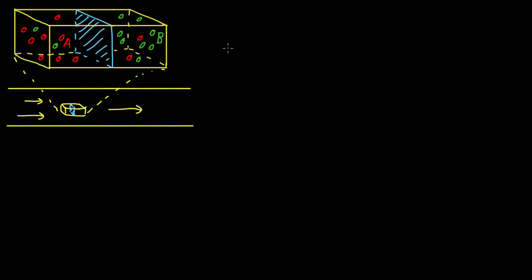So whatever the underlying physical mechanisms are for the driving of the flow, we can define the absolute mass flux of a species. I'll give this by n-dot — the dot over it because I want to highlight that this is a flux. So this is the absolute mass flux of species i, in kilograms per square meter per second. Just to make sure things don't get confusing, I shall write it out explicitly: absolute mass flux.